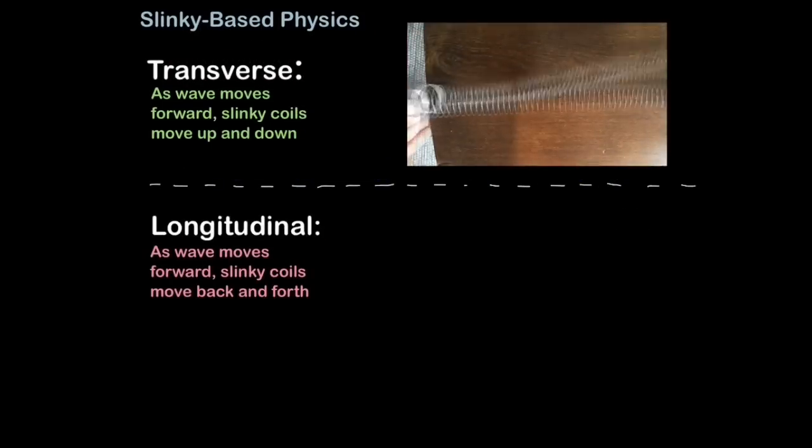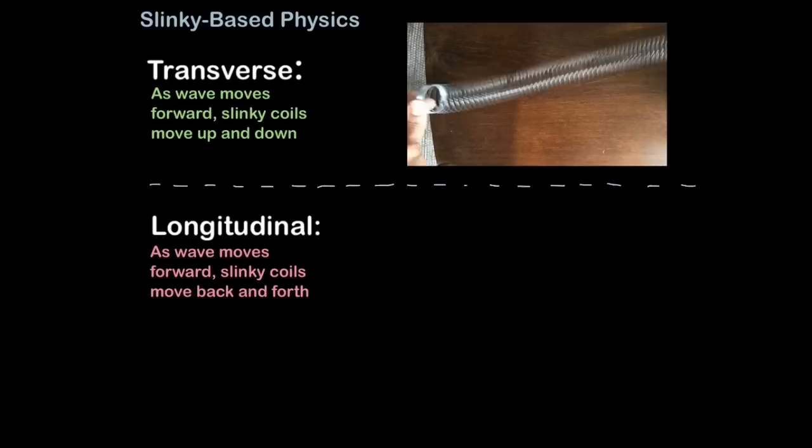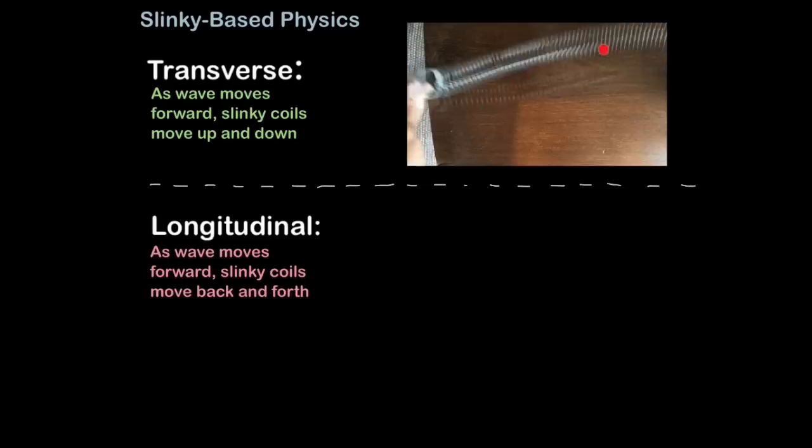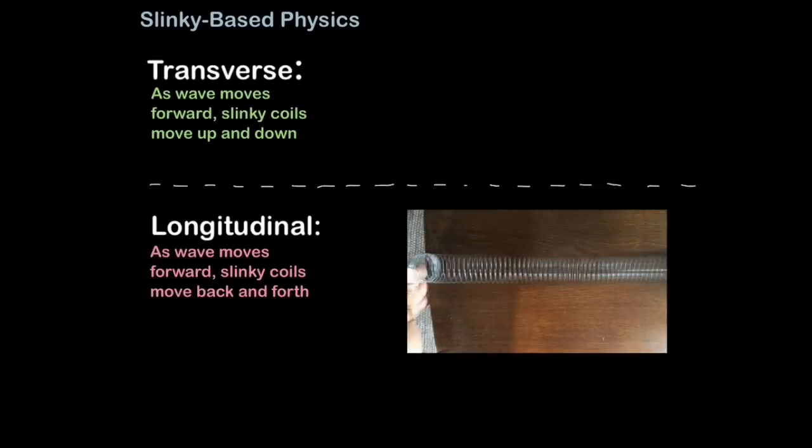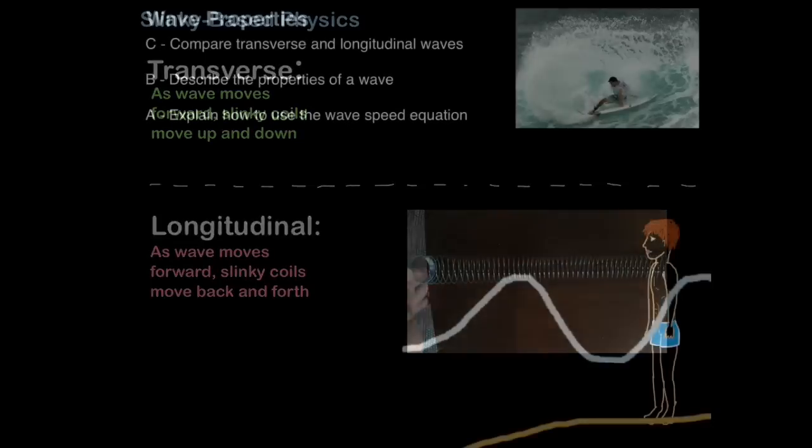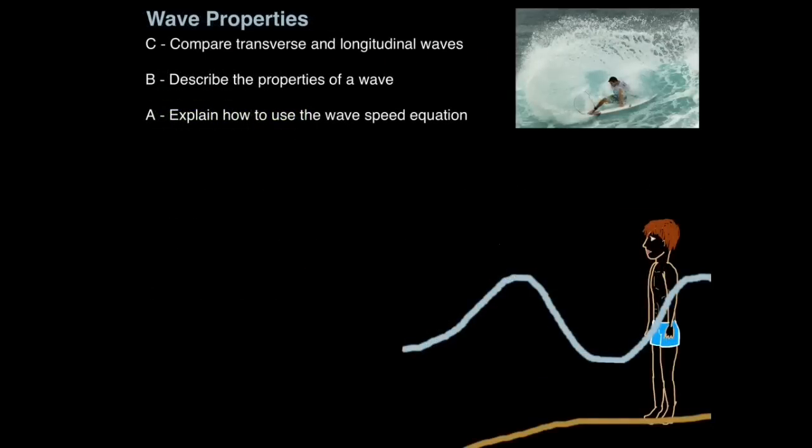With transverse waves, as the wave moves forward, the slinky coils move up and down as you can see. Here it is in slow motion. And here with longitudinal waves, you can see that as the wave moves forward, the slinky coils move back and forth.